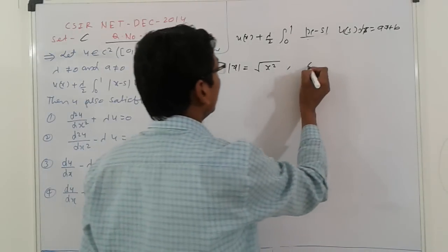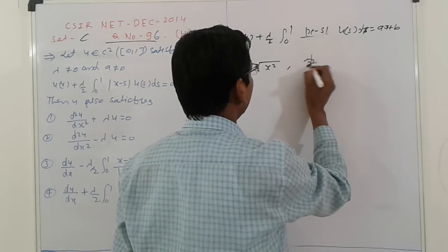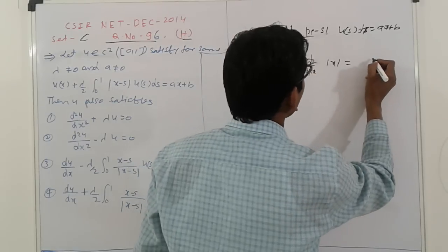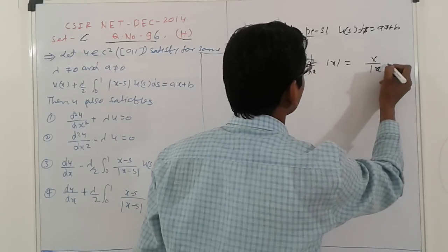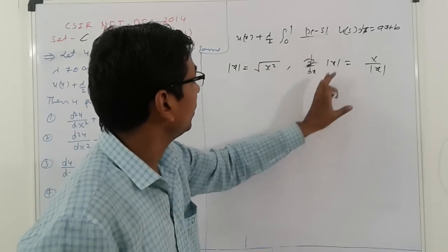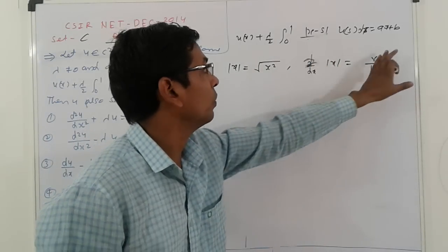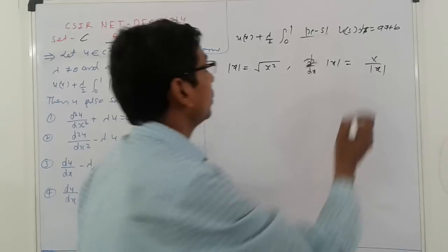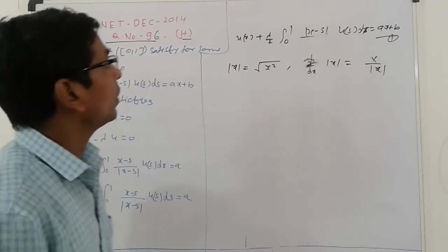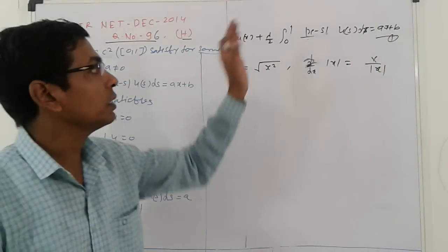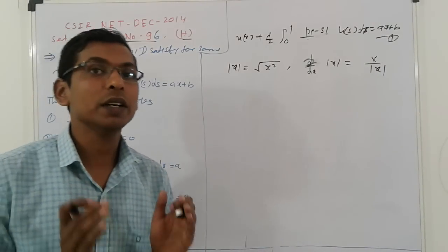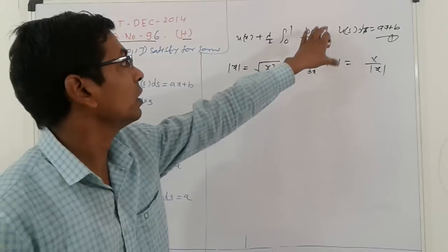Otherwise, the derivative d/dx of |x| is equal to x / |x|. That is the property of mod x. We will use equation (1) and apply differentiation under the integral sign — that is, differentiating equation (1) with respect to x.